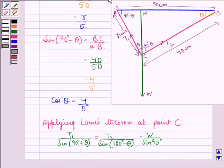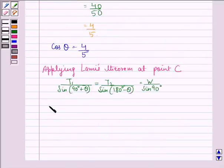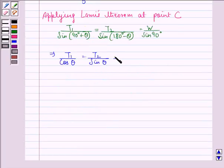This is how we get T1 upon cos theta is equal to T2 upon sin theta and this is equal to W upon 1. This implies T1 is W cos theta and T2 is W sin theta.